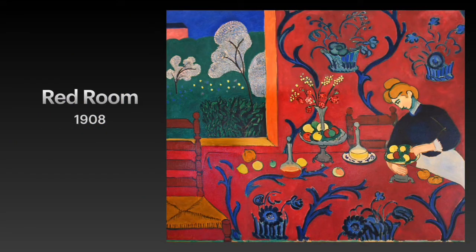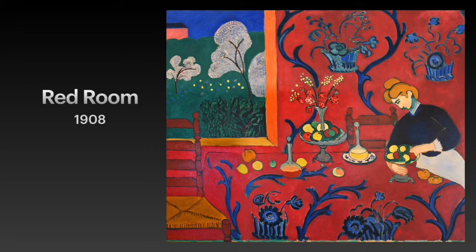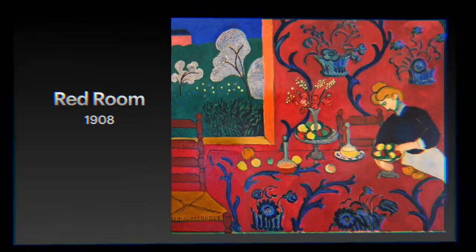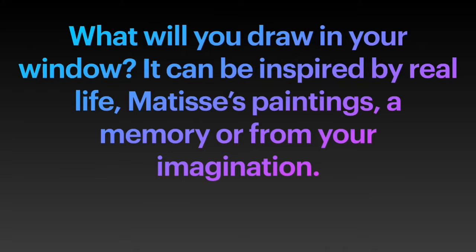Here is his painting Red Room — pretty easy to see why he called it that. In this painting of the indoors, he also painted a window to the outside. This painting gave me lots of inspiration for my drawing because it reminded me of Ohio. What will you draw in your window? It can be inspired by real life, Matisse's paintings, a memory, or from your imagination.